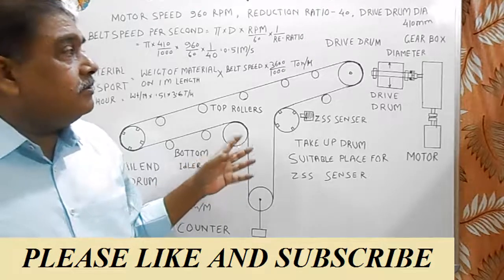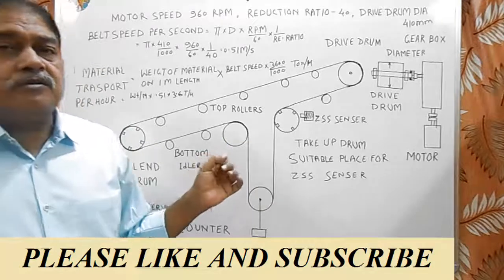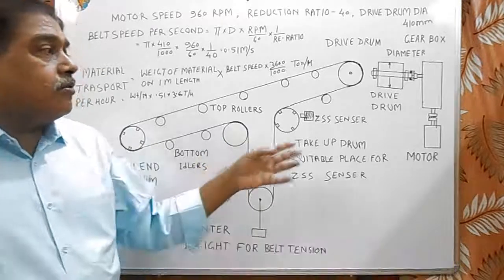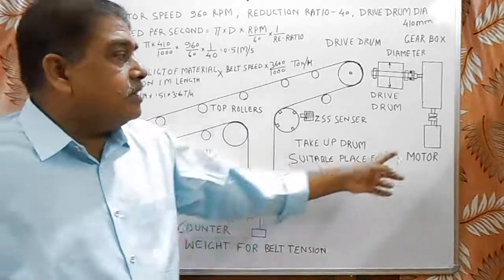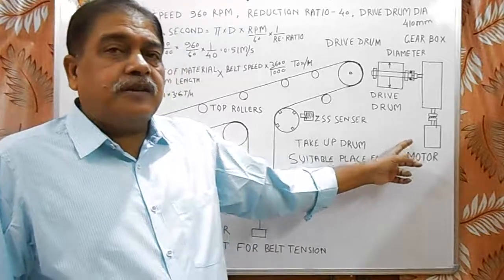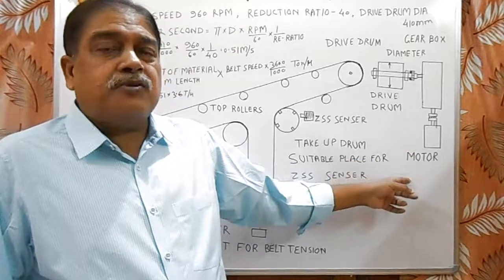In addition to these, there are 2 types of controls. First is local control near the motor. Here near the motor there are emergency stop push button, start push button, and stop push button.